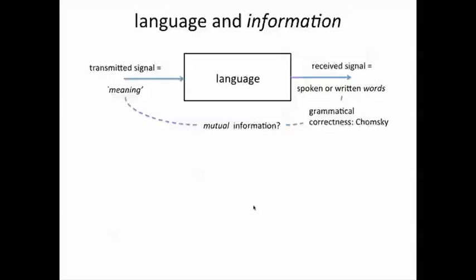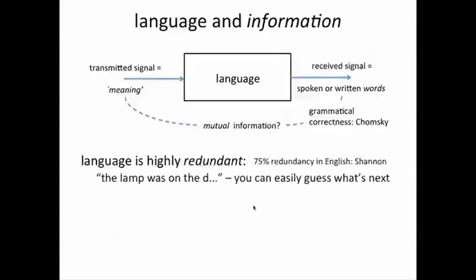We'll return to this much later when we talk about extracting information from spoken or written words. But for the moment, let's return to information theory and language with the point that language is actually highly redundant. In particular, Shannon figured out that English is 75% redundant.